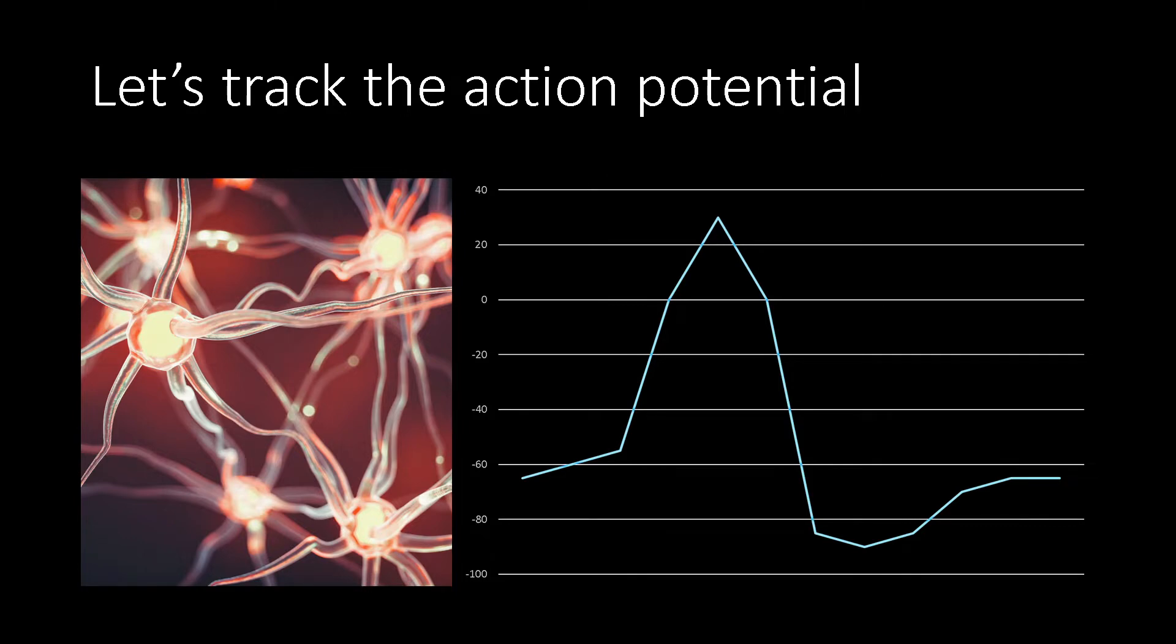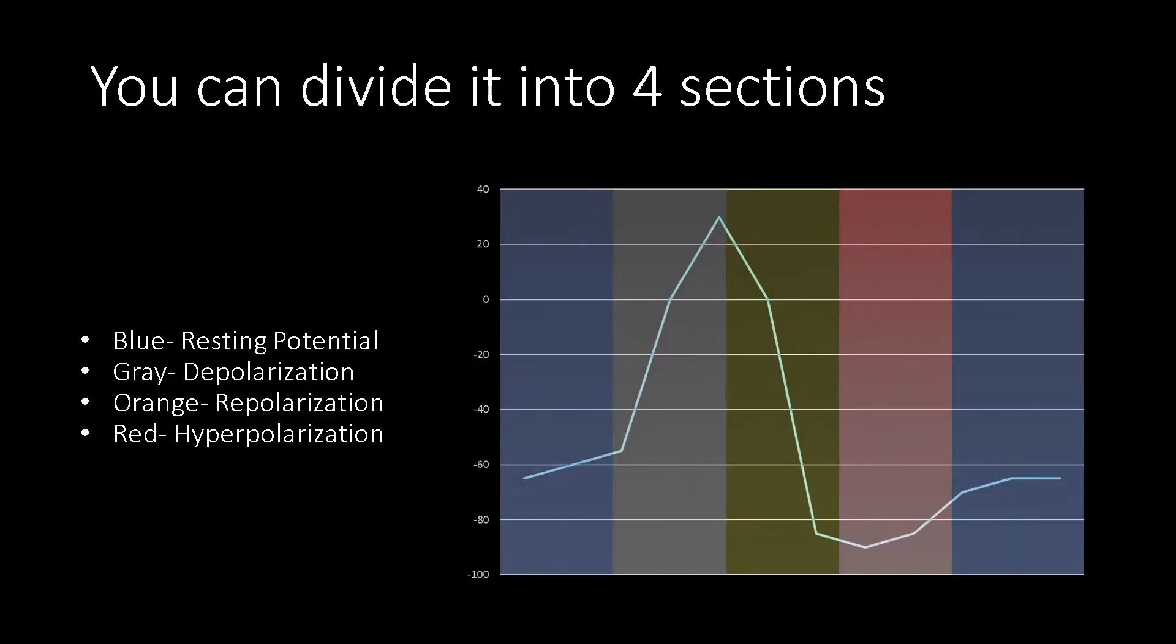Well, first let's very briefly go over the action potential. This is pretty much the voltage over time graph of the action potential. So we can divide the action potential into four sections: resting potential, depolarization, repolarization, hyperpolarization, and then we're back to resting potential.